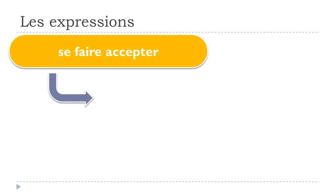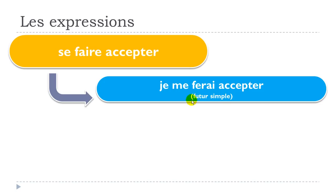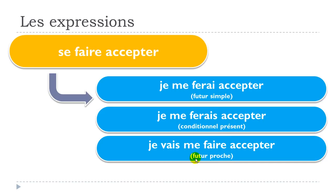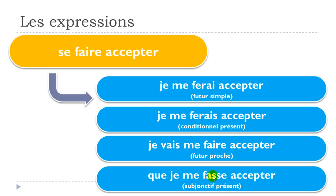Let's conjugate this expression at different tenses. Futur simple: je me ferai accepter. Conditionnel présent: je me ferais accepter — phonetically very similar but note the extra s in writing. Futur proche: je vais me faire accepter. Subjonctif présent: que je me fasse accepter.